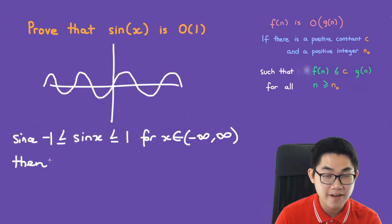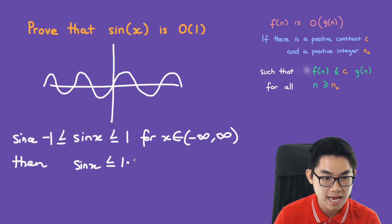then we can find the constant c. So here, sine of x is less than a constant c and let c equal to 1 times 1. And this one here is from this one.